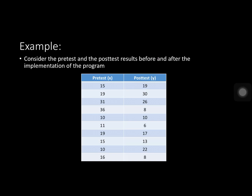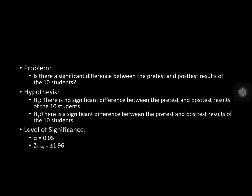The formula used is Z equals the absolute value of the difference D (which is the difference between the plus and minus signs) minus 1, divided by the square root of N, where N is the number of plus and minus signs. For our example, consider the pre-test and post-test results before and after implementation of a program. The problem statement asks: is there a significant difference between the pre-test and post-test results of the 10 students? The null hypothesis states there is no significant difference, and the alternate hypothesis states there is a significant difference. We test this at alpha equal to 0.05.